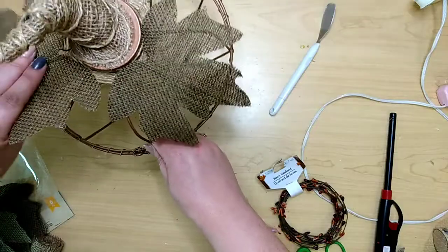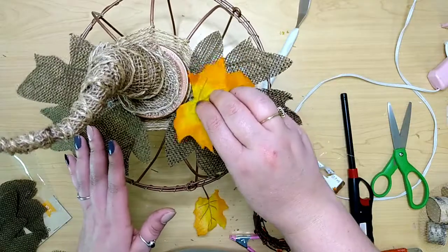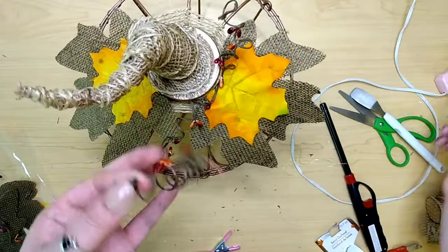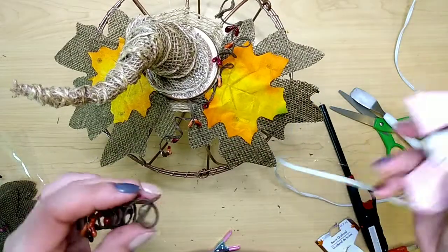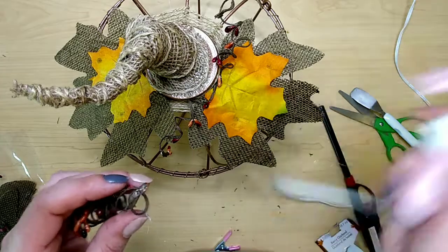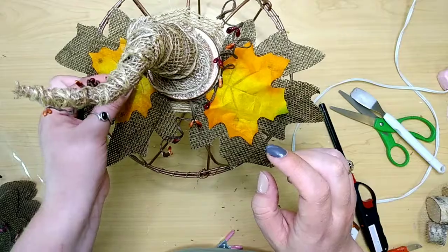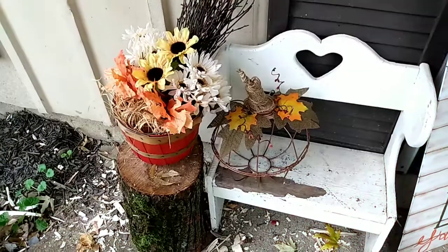Then you can embellish with whatever you want really. I used some burlap leaves and then a couple of leaves off of a Dollar Tree maple stem, just hot glued them in there, added some berry garland curlicues. I did two of these, one of them I folded in half so there's two smaller ones and then one I just left it big and long. I think this turned out super nice.